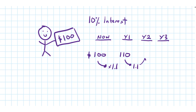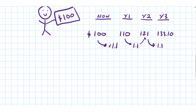If I leave the money in the bank for another year, that will again grow at 10%, and at the end of year two I will have $121. And if I keep that money in the bank, at the end of year three — multiplying again by 1.1 for 10% interest — I'll have $133.10. That's the idea of the future value of money, and we have just demonstrated the concept of compounding.